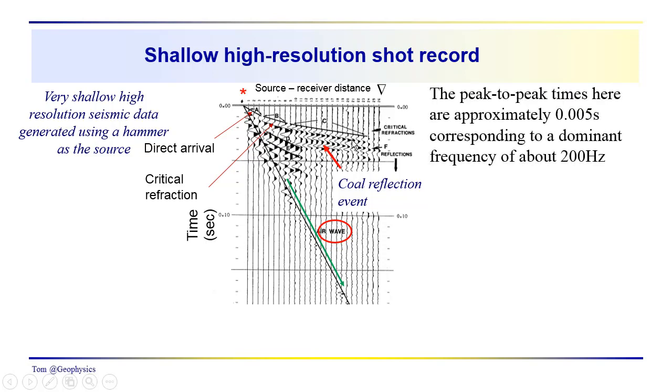We can also see from looking at the peak-to-peak times here that we have peak-to-peak times or periods of about 0.005 seconds. So this is 0.01 seconds here. It's about half of this. So that gives us a dominant frequency, just roughly a dominant frequency of about 200 hertz.